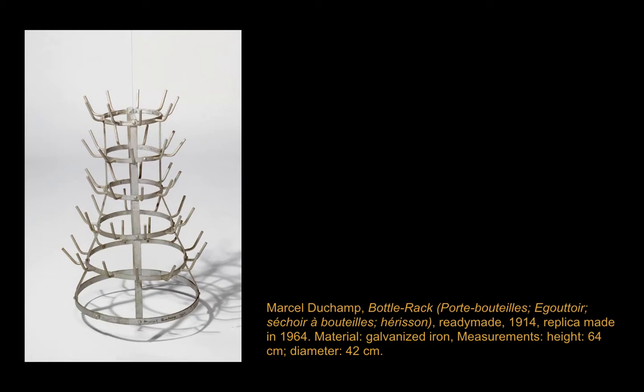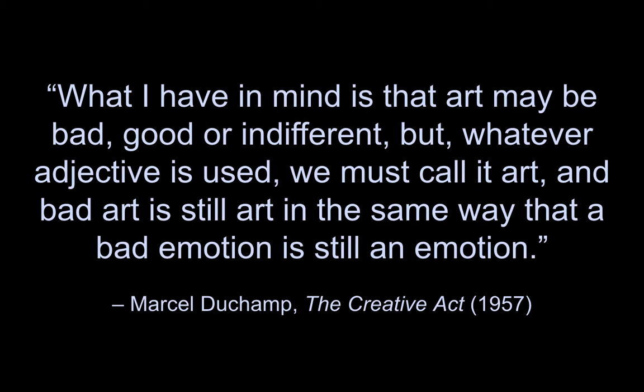The following year, Duchamp invented the readymade, which was defined by the Surrealist André Breton as, quote, 'manufactured objects promoted to the dignity of art through the choice of the artist.' The readymades proved to the art world that art could be anything, anywhere. Take, for example, some of Duchamp's examples — a bottle rack and a urinal. Writing much later, Duchamp stated: 'What I have in mind is that art may be bad, good, or indifferent, but whatever adjective is used, we must call it art. And bad art is still art in the same way that a bad emotion is still an emotion.'